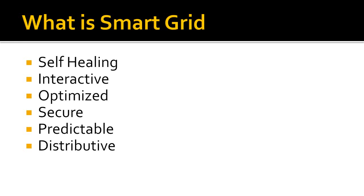The smart grid must support the connectivity of distributed generation to the power grid. It will reduce peak demands from central generation plants and improve the power quality and reliability of the power system. The consumer will also have more choice and control, lowering electricity costs. There will also be environmental benefits as renewable generation will be utilized to power homes and offices.